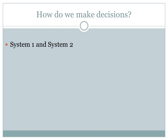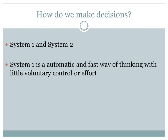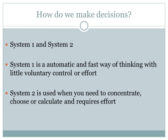So how do we come about to make decisions? In the 70s, a psychological theory was put forward that there are two main types of decision-making strategies we use: System 1 and System 2. System 1 is an automatic and fast way of thinking with very little voluntary control or effort. System 2 is used when you need to concentrate, calculate, and it requires effort.